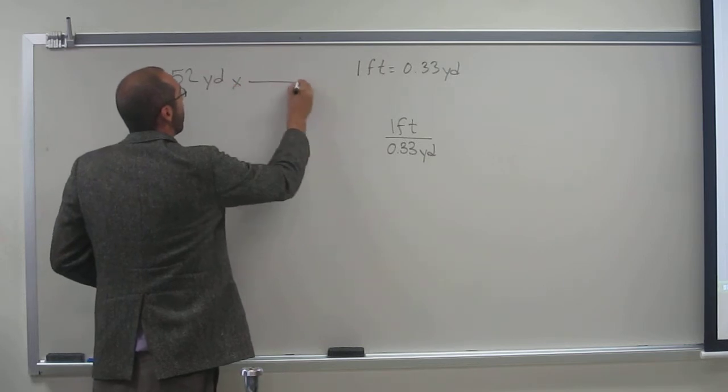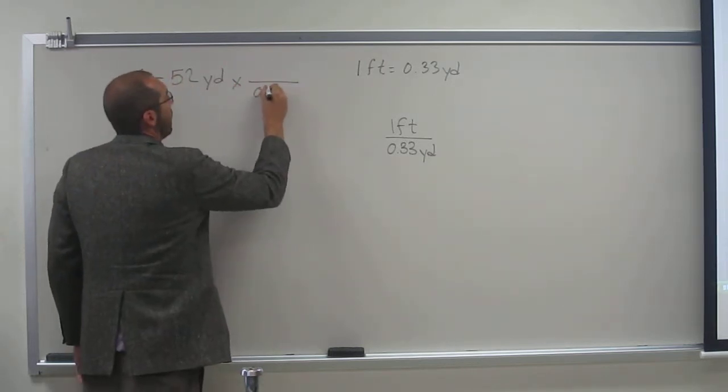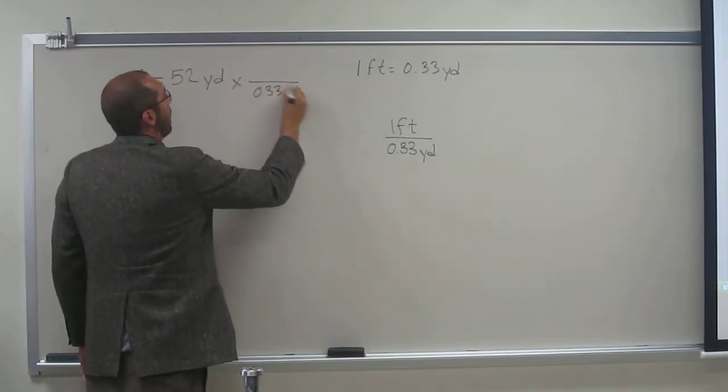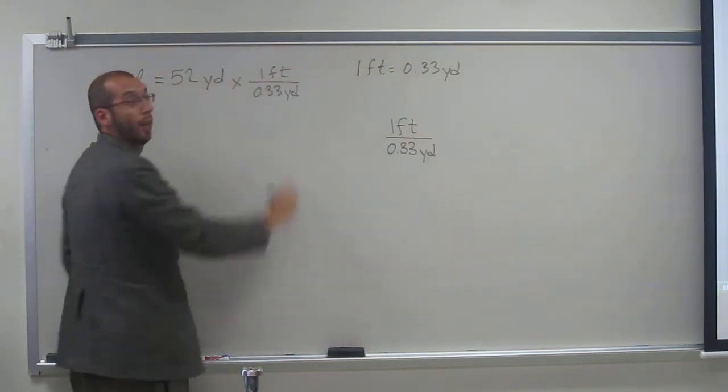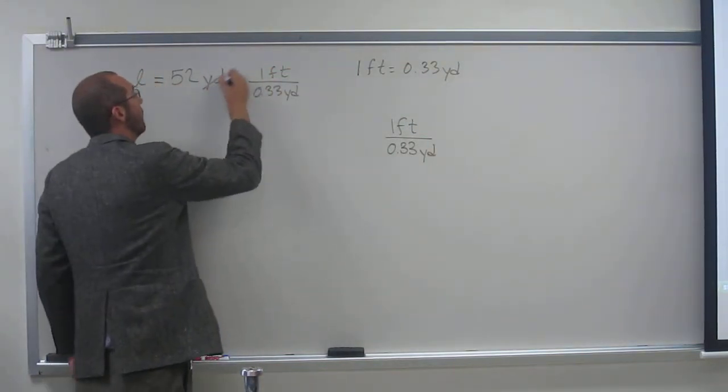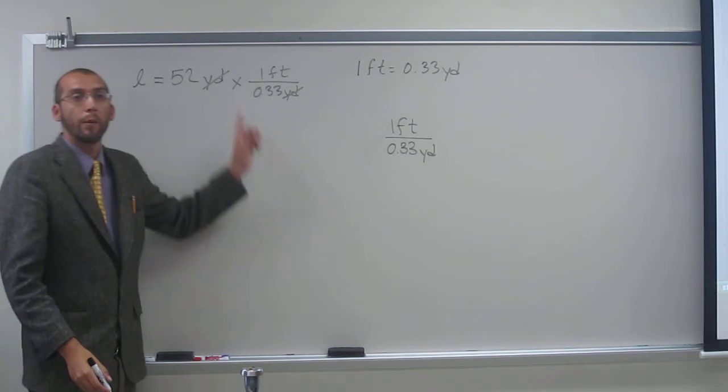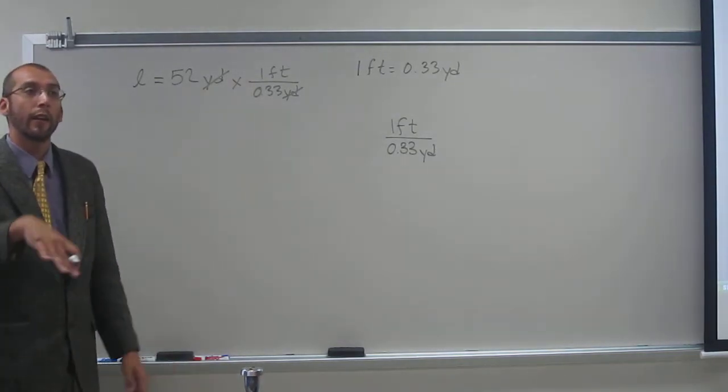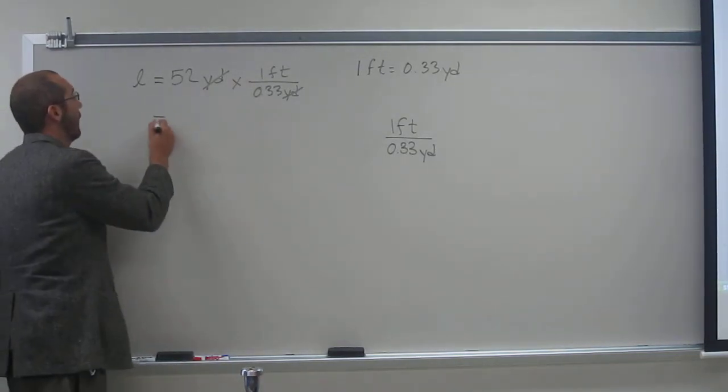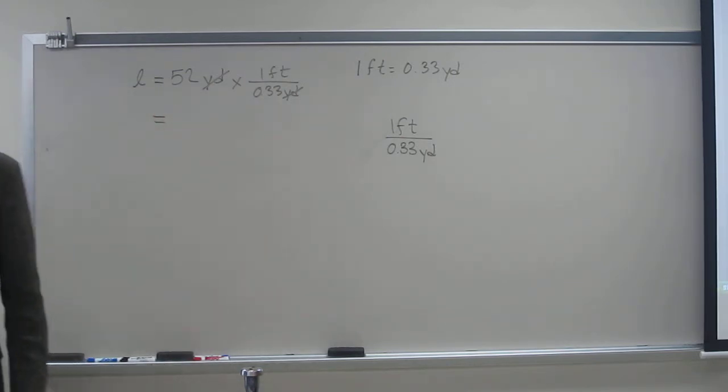Take this, multiply by, like that, and what do I do? If something's in the numerator and that same thing's in the denominator, they cancel out. So I get 52, and then I want to divide that by 0.33.